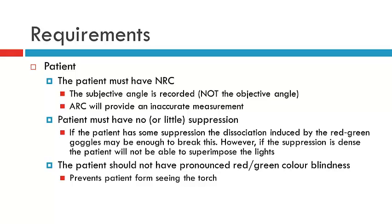Given the principles of this test, there are a few requirements to perform this examination. Firstly, the patient must have normal retinal correspondence, because you're relying on the subjective angle — if the patient has ARC, the measurement of the deviation will be incorrect. The patient must also have no suppression, as they would not be able to see one of the lights. Patients can have a slight amount of suppression, and the dissociation of the red-green goggles can sometimes be enough to break it. Be aware that this is a limitation of the test.